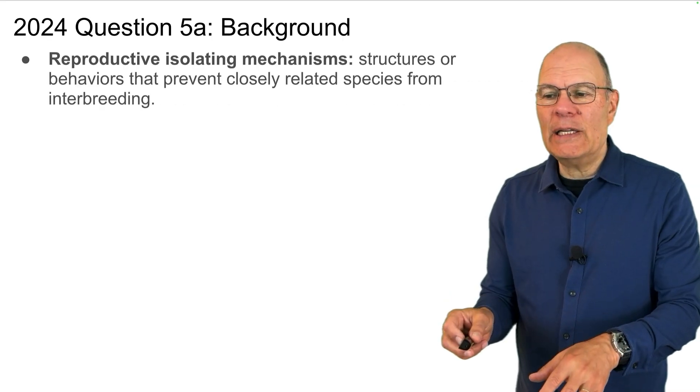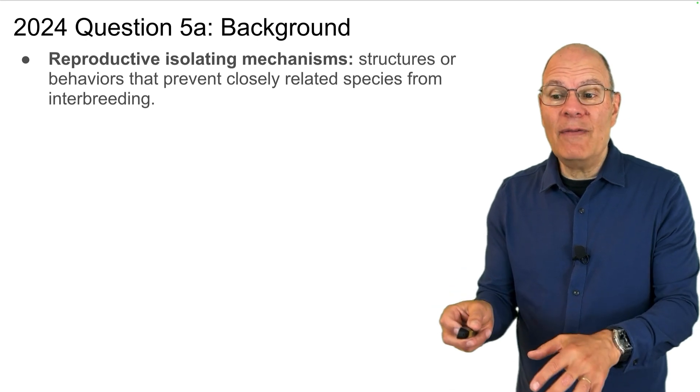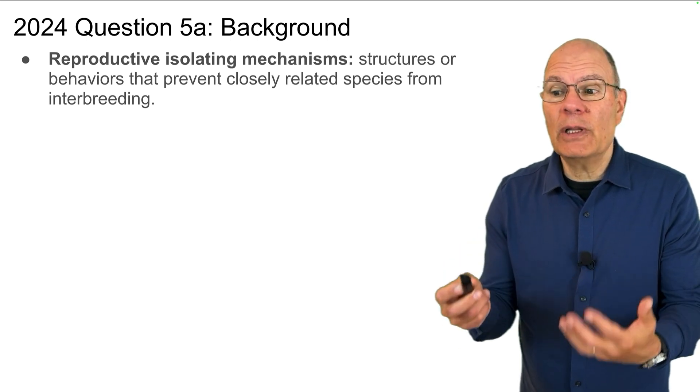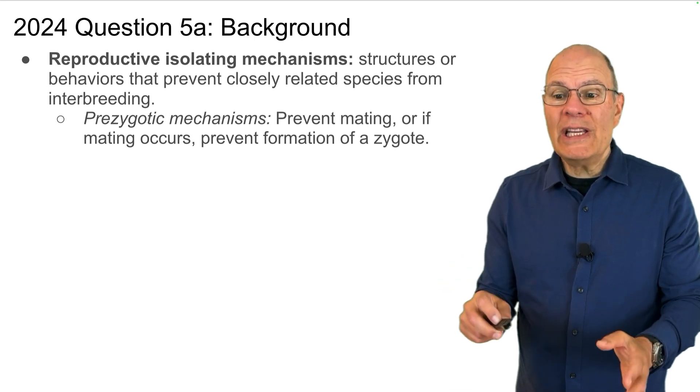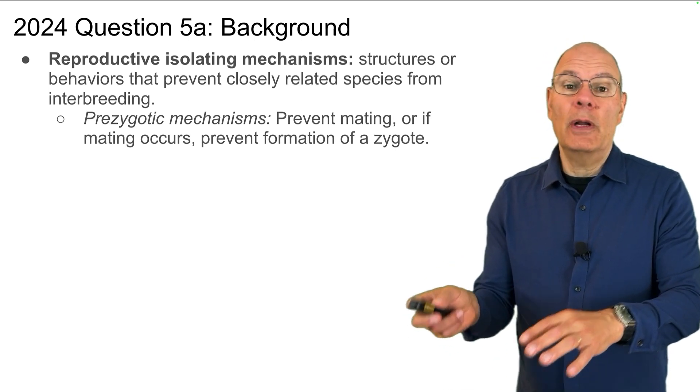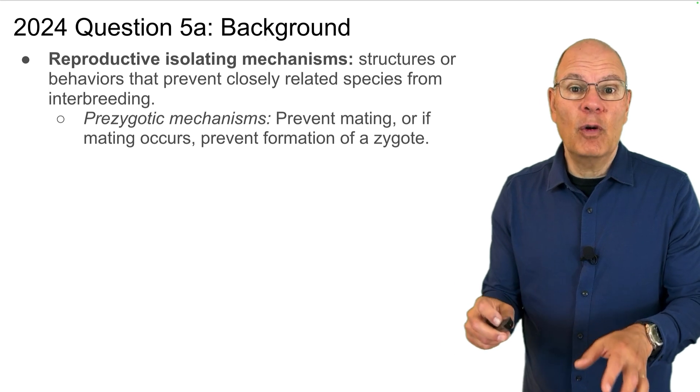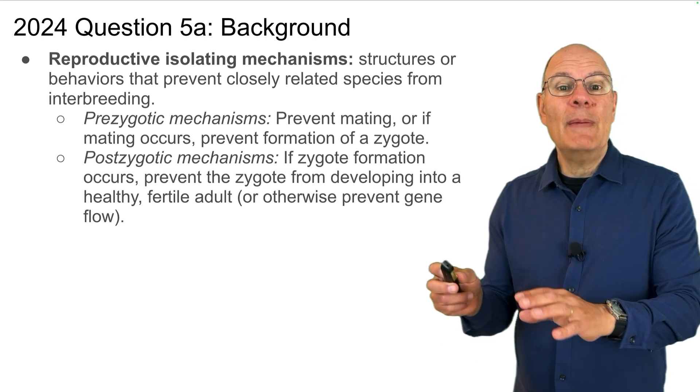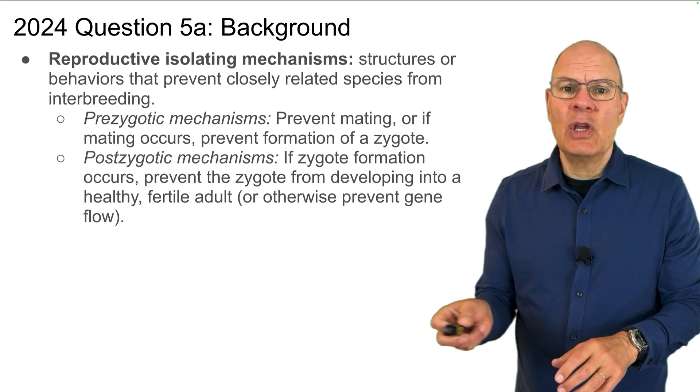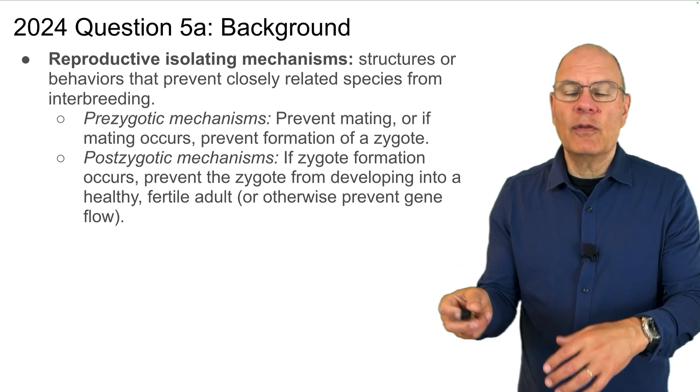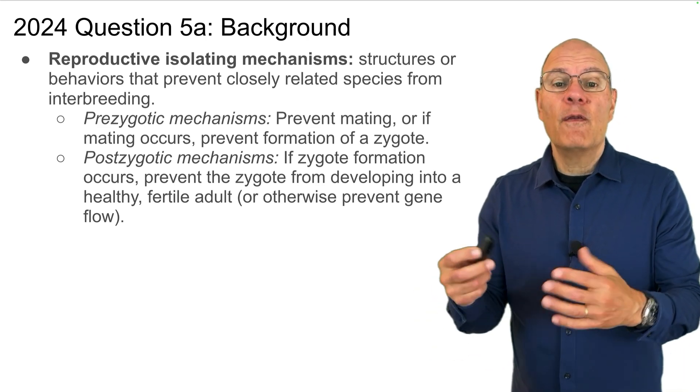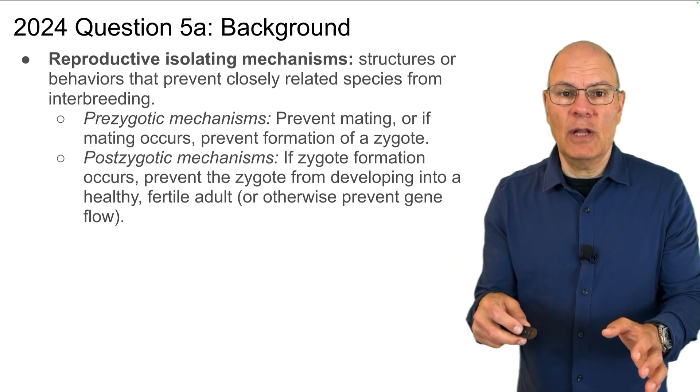Reproductive isolating mechanisms are structures or behaviors that prevent closely related species from interbreeding. Those can be pre-zygotic mechanisms that prevent mating, or if mating does occur, prevent formation of a zygote, or they can be post-zygotic mechanisms where if zygote formation occurs, they prevent the zygote from developing into a healthy, fertile adult, or they otherwise prevent gene flow.